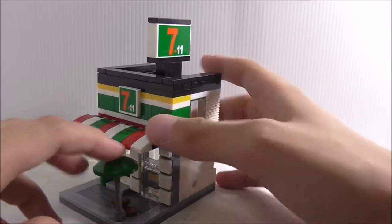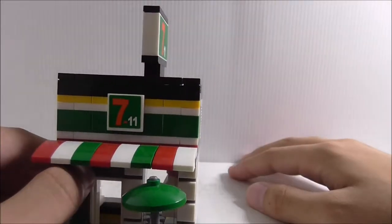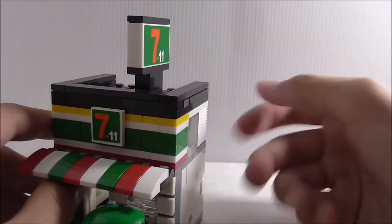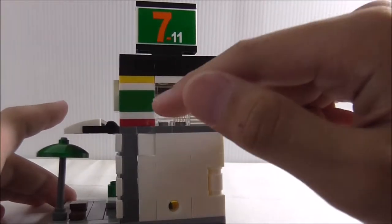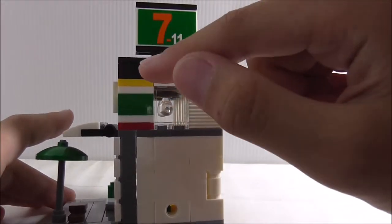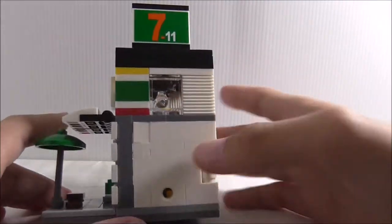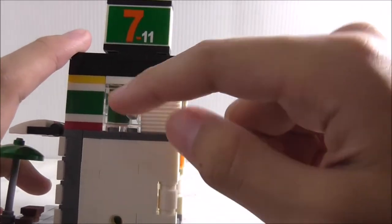On the top here, you got the 7-11 sign, which is not the original because they don't want to get a copyright issue. It's got the 7-11 iconic colors: yellow, green, white, and red. That's cool. On the side of the building, there's this glass window.